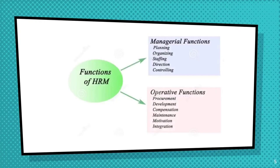The third operative function is compensation, which is based upon performance analysis to ensure that employee performance is at an acceptable level. The fourth is maintenance: human resources are considered an asset for the organization, so employee turnover is not considered good. HRM always tries to keep the best performing employees. In motivation, it is based on employee welfare, providing various services, benefits and facilities to employees. Finally, there is integration of employees.